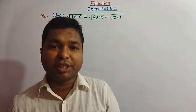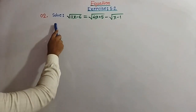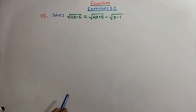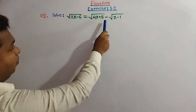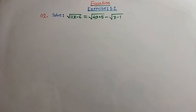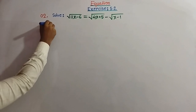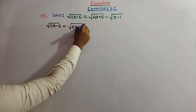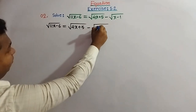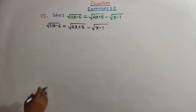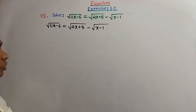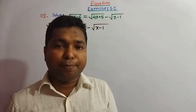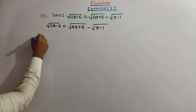Now question number 2: solve square root of (11x minus 6) equal to square root of (4x plus 5) minus square root of (x minus 1). The given equation is square root of (11x minus 6) equal to square root of (4x plus 5) minus square root of (x minus 1). Since there is a radical, we have to remove the square root sign by squaring on both sides.